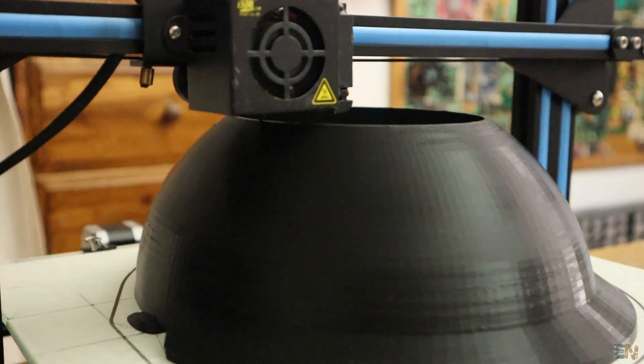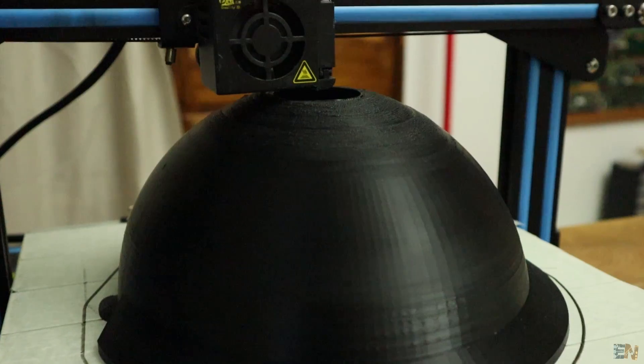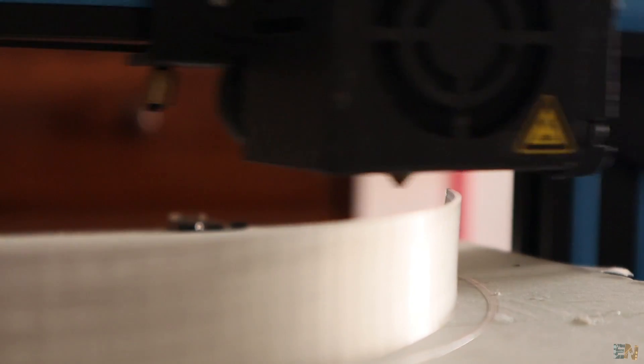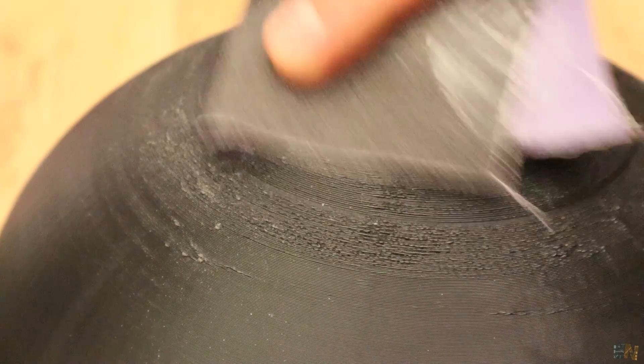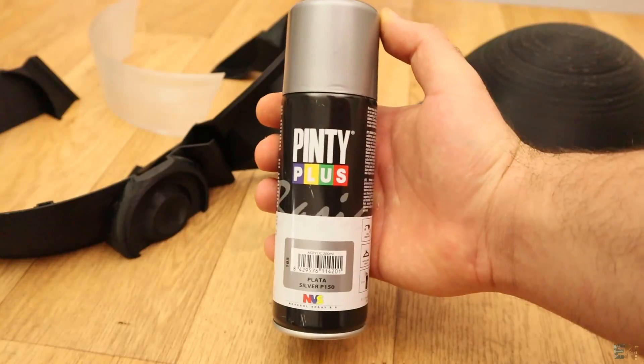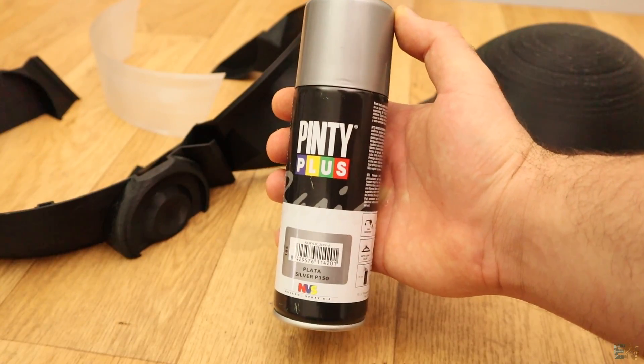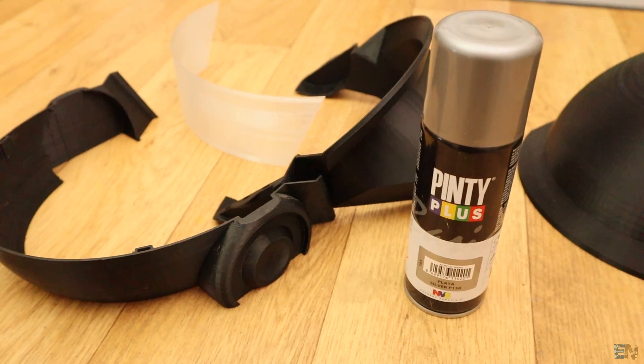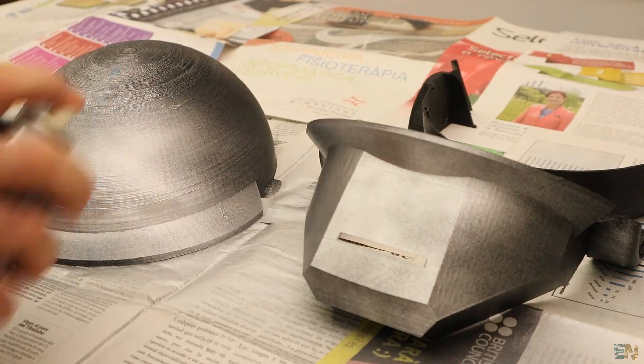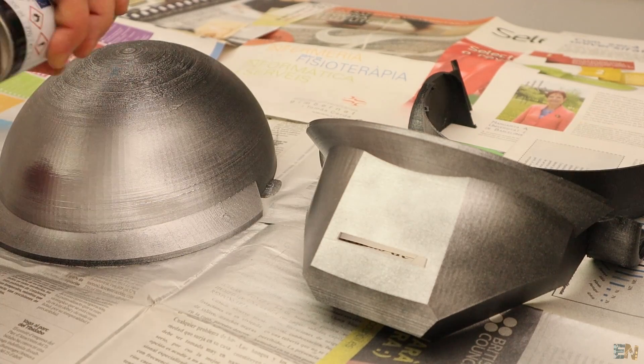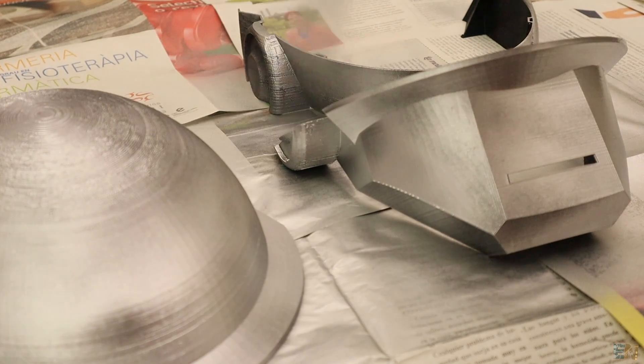I've used my Creality CR10 for all the files and it took me a total of around 30 hours. Once I had the files I removed all the excess filaments and passed some sandpaper over the plastic to make the surface smoother. Now the Daft Punk helmet is metallic. For that I've bought some metallic spray paint. Spray one or two layers of metallic paint and let the parts to dry.